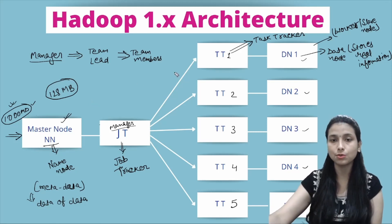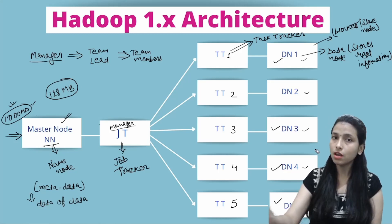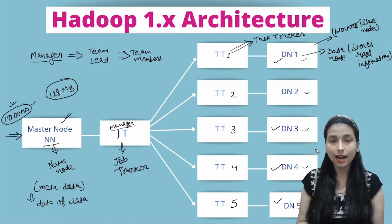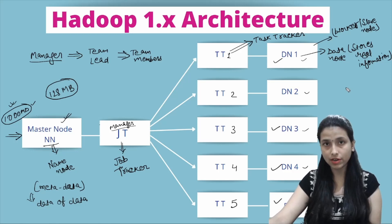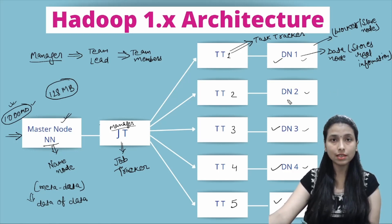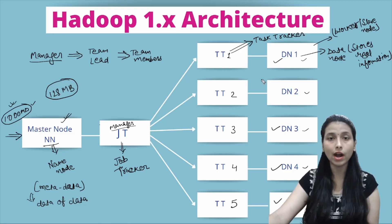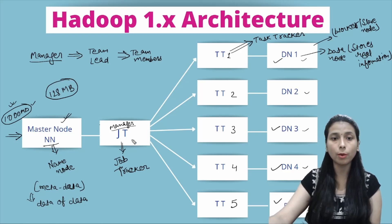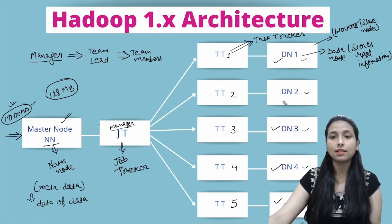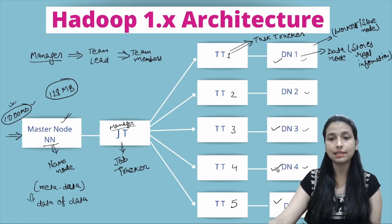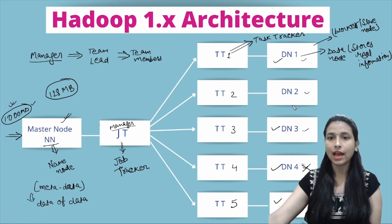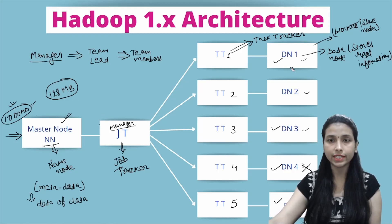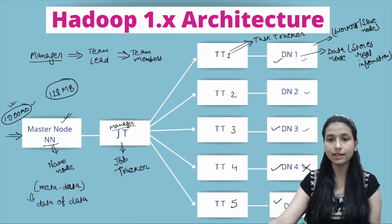Suppose Data Nodes 1, 3, 4, and 5 respond back. The Job Tracker verifies whether those Data Nodes are truly available — checking storage, bandwidth, and whether the hard disk is full. If Data Node 4 doesn't fulfill the requirements, its request gets rejected. The Job Tracker then assigns the file chunk to Data Nodes 1, 3, and 5, and those Data Nodes will store the chunk.